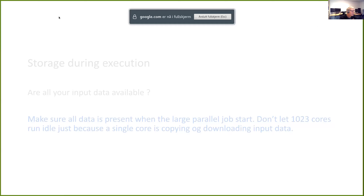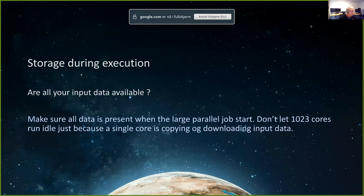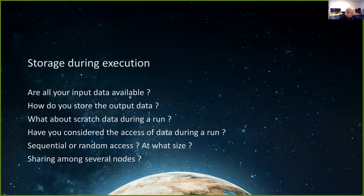Storage during execution: are all your data available? How do you store output data? What about scratch data during a run? Have you considered whether access is sequential or random? Random write or read becomes more of an issue. For all practical purposes, if you are doing it in chunks of one megabyte or more, random I/O compares to sequential. If chunks are larger than one megabyte, you don't have to worry about the random regime.